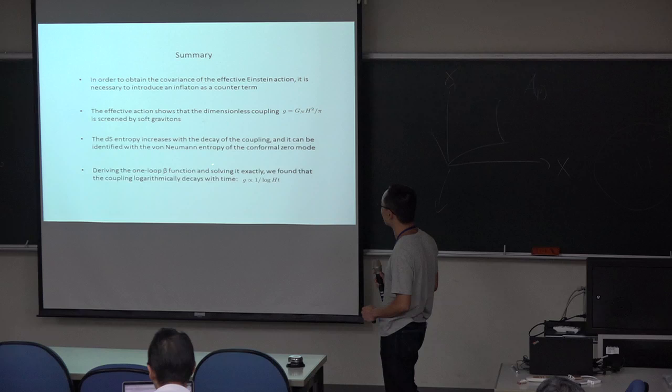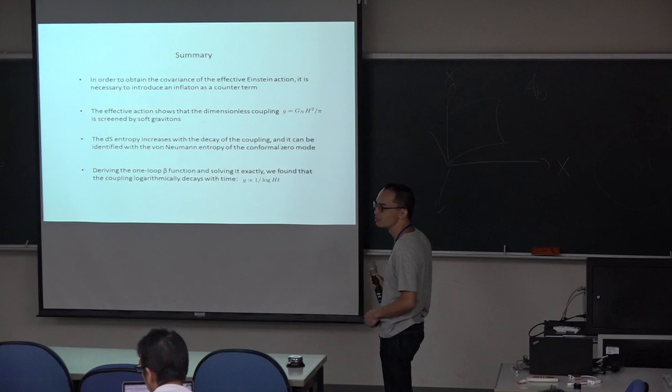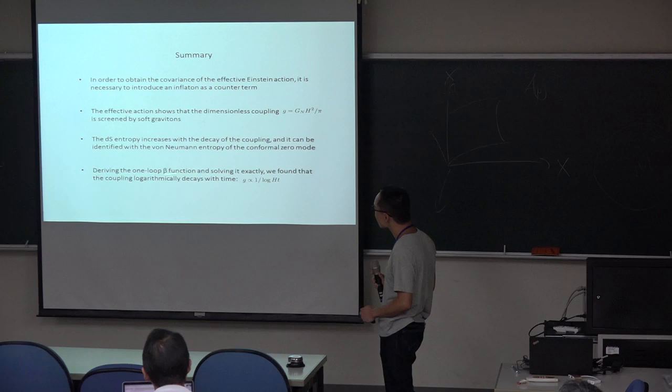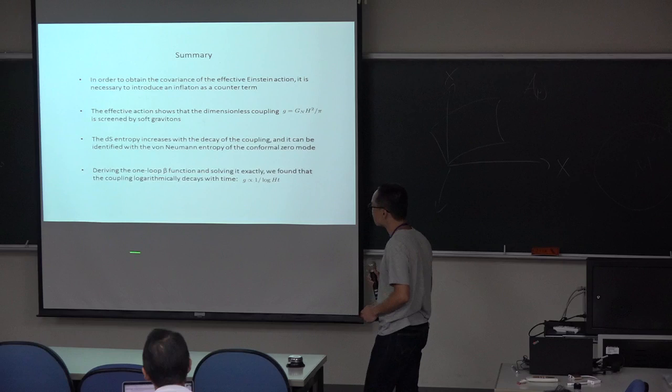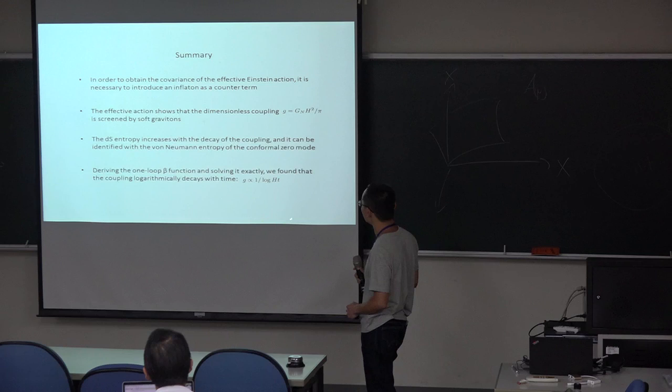The correspondence is the entropy increases with the decay of the coupling. And the entropy time evolution can be identified with the beta function. And in contrast to scalar fields, gravity can describe the global time evolution. So from the time evolution, we get the beta function, and then we find the running of the coupling.